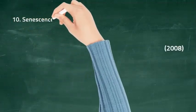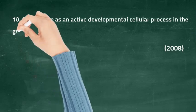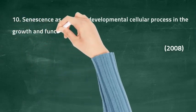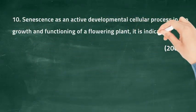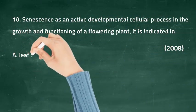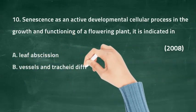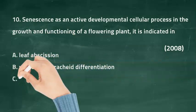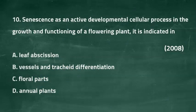The last question for this lecture: senescence as an active developmental process in the growth and functioning of a flowering plant is indicated in — option A: leaf abscission, option B: vessel and tracheid differentiation, option C: flower parts, option D: annual plants. The right answer is option B, vessel and tracheid differentiation.